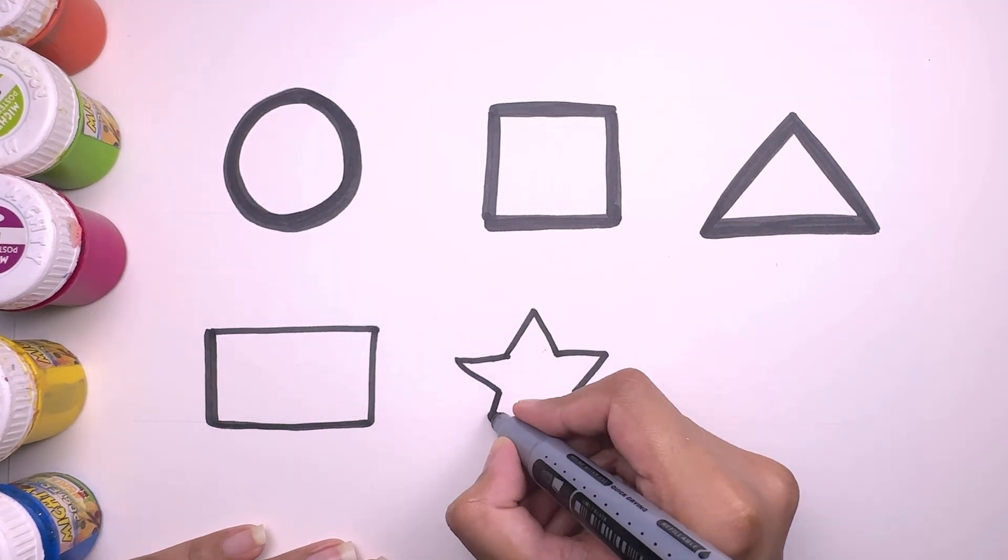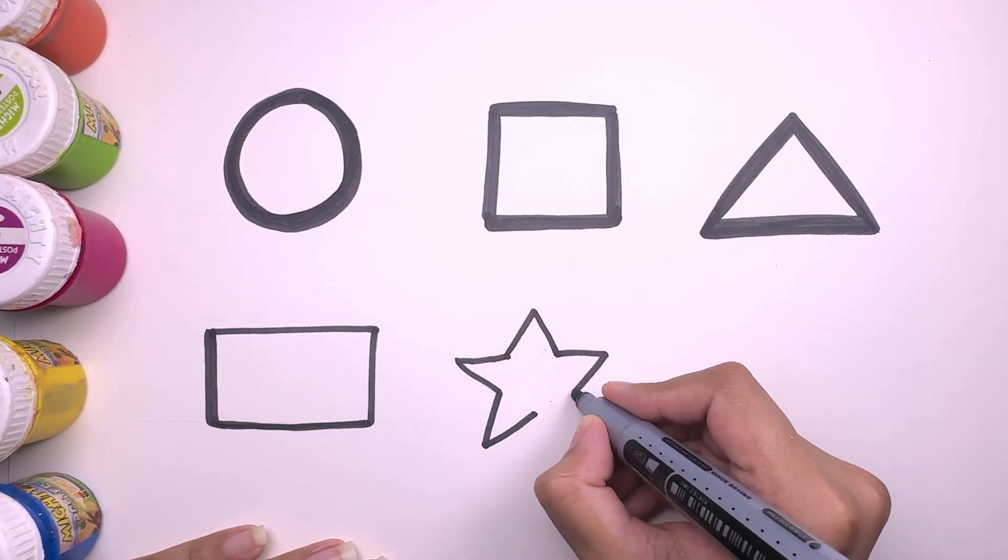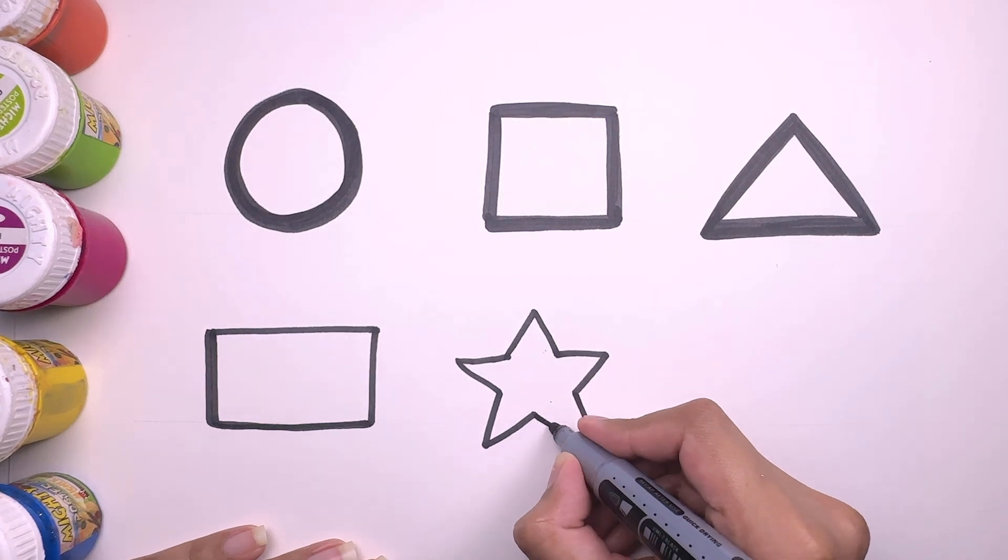This is a star. S for star. H, I, J, K, L, M, N, A, P.